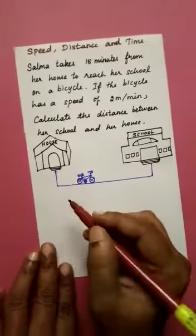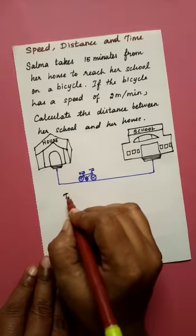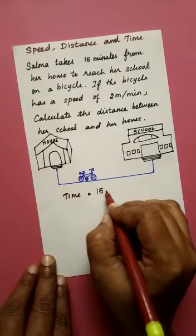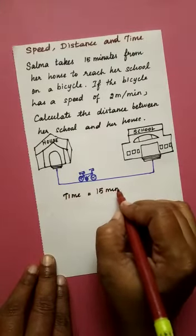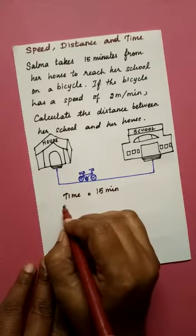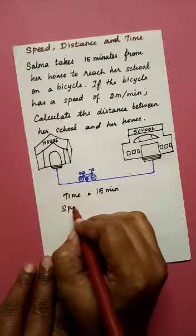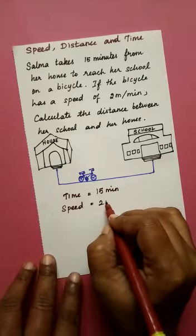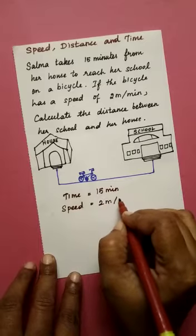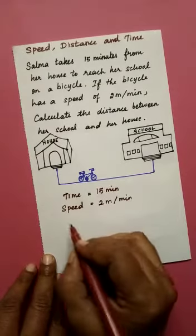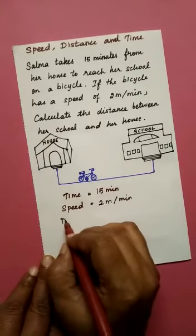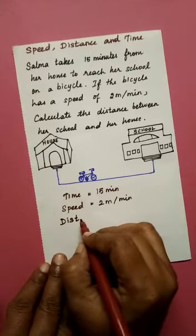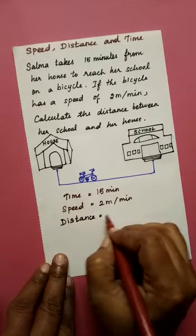Here, the time is equal to 15 minutes. Speed is equal to 2 meter per minute. So, we should calculate the distance.